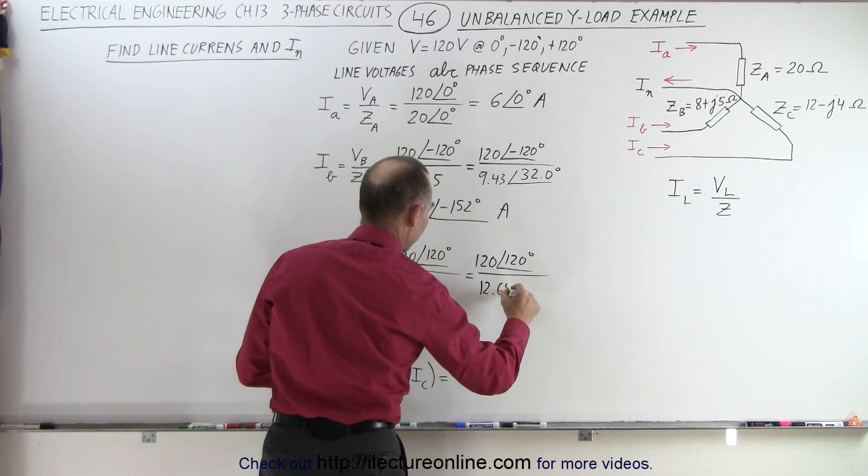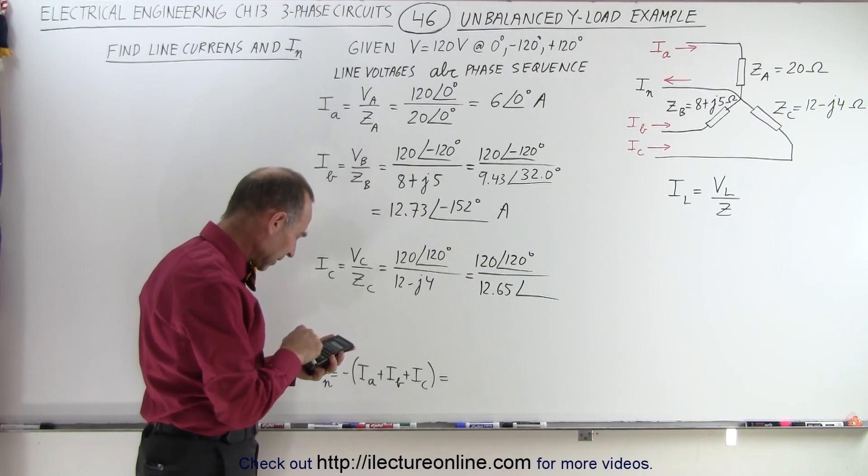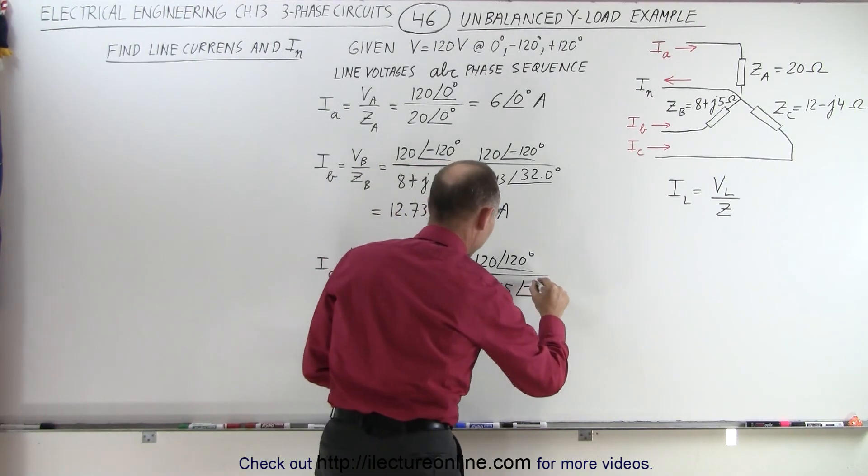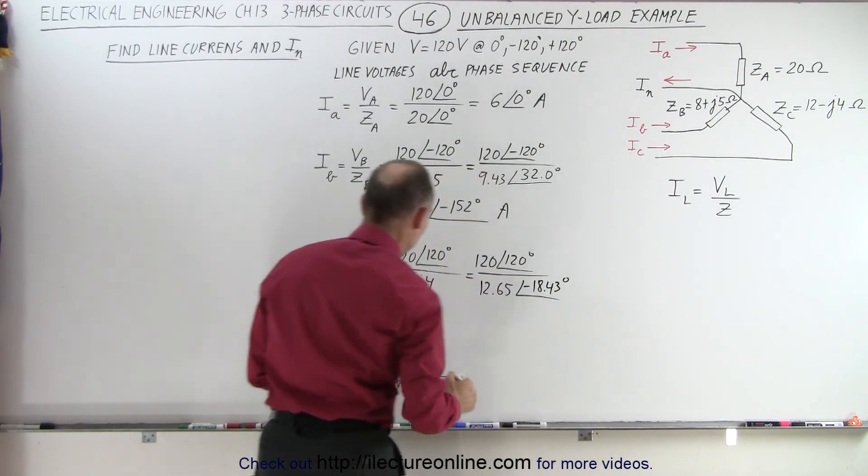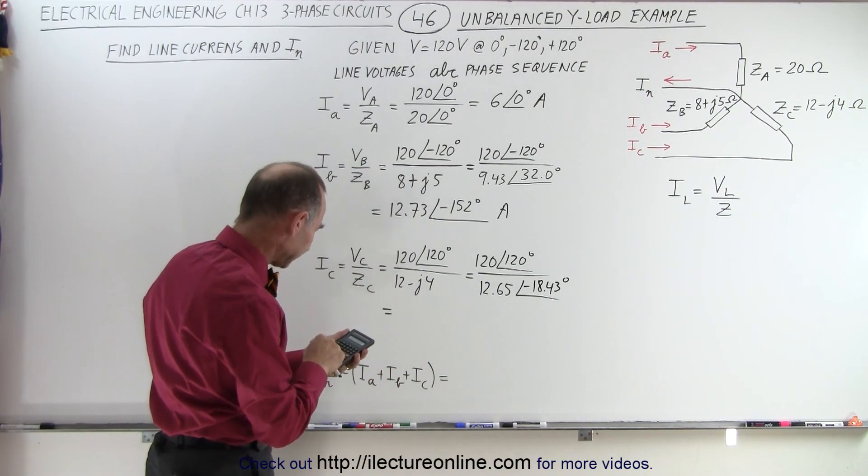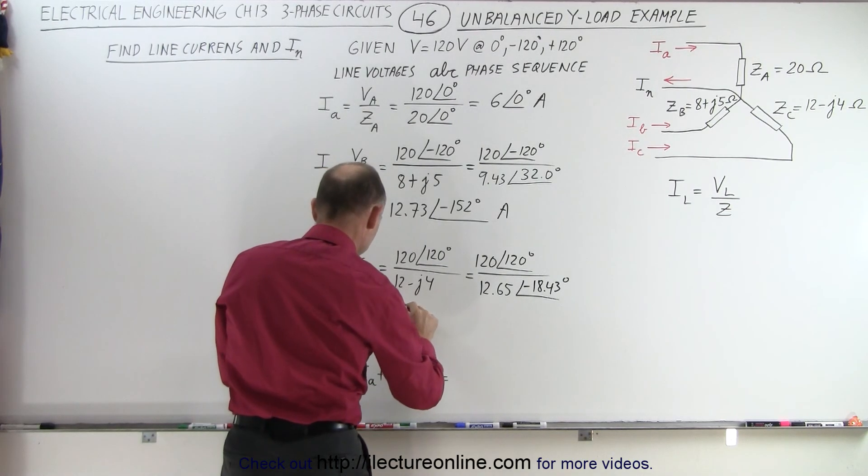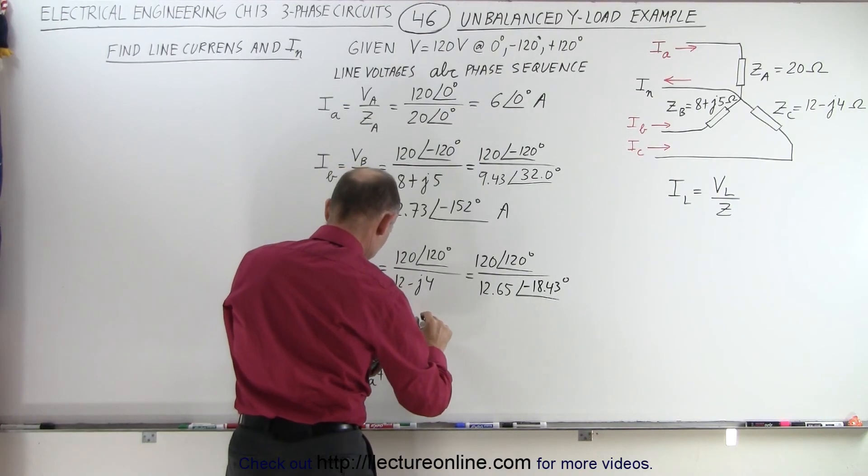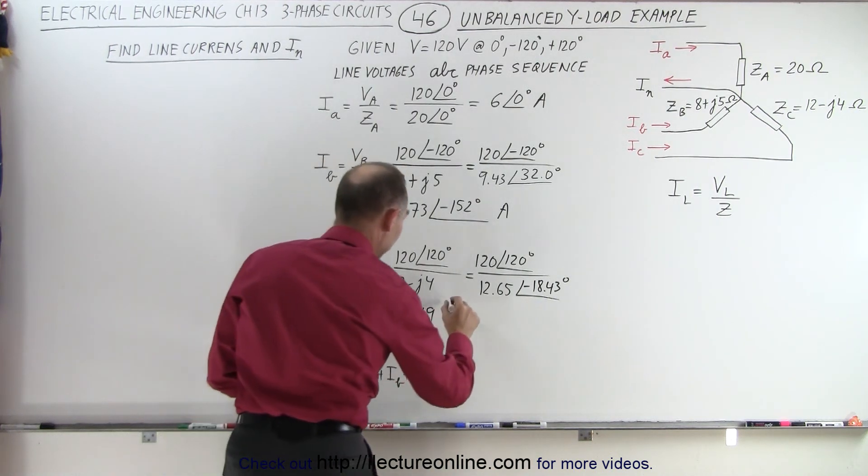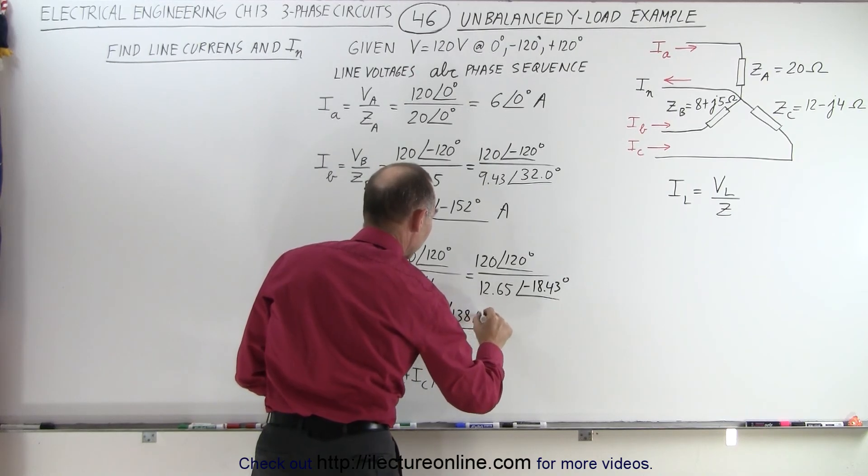12.65 with a phase angle of, that would be one third, it's negative, and the inverse tangent would be a minus 18.43 degrees. And when we calculate that, we have 120 divided by 12.65, that gives us a current of 9.49, and a phase angle of 138.43 degrees.